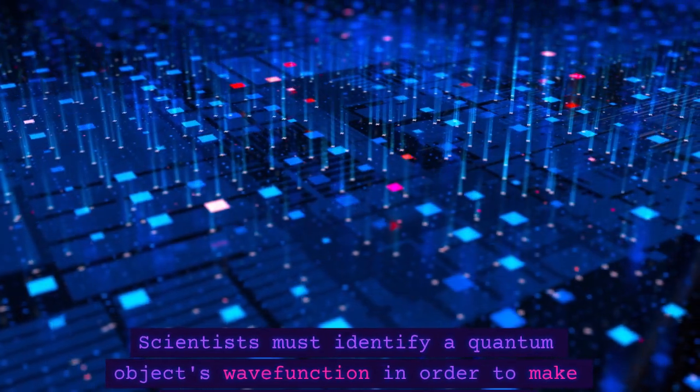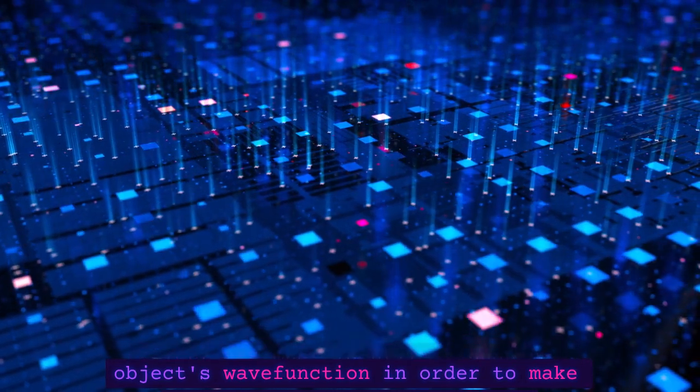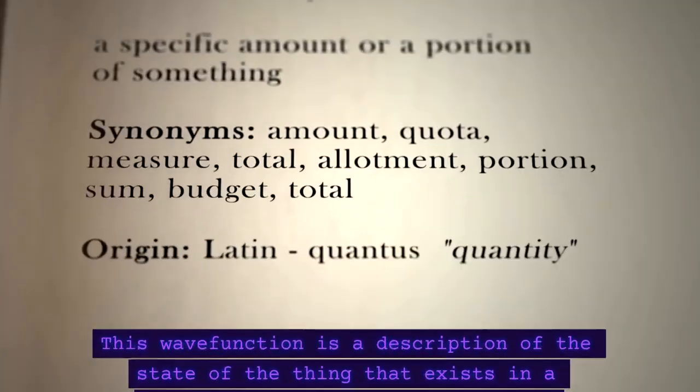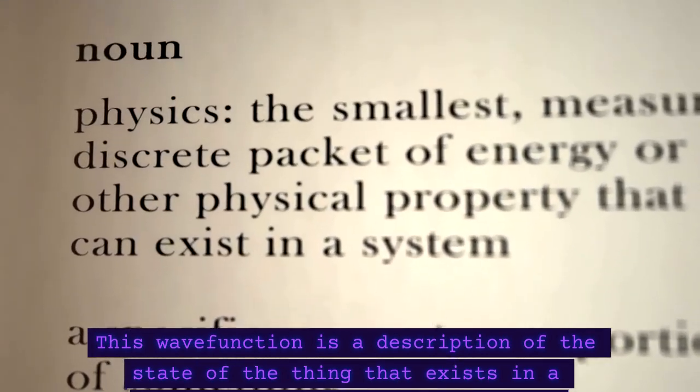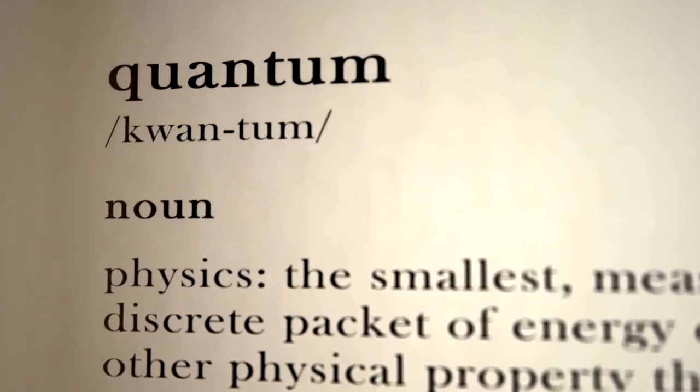Scientists must identify a quantum object's wavefunction in order to make precise predictions about it. This wavefunction is a description of the state of the thing that exists in a superposition of all the potential physical values a photon can have.